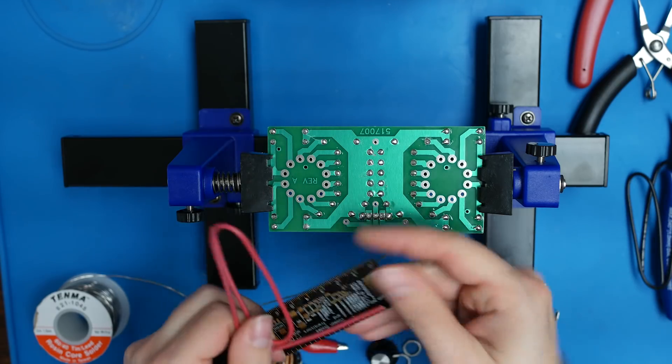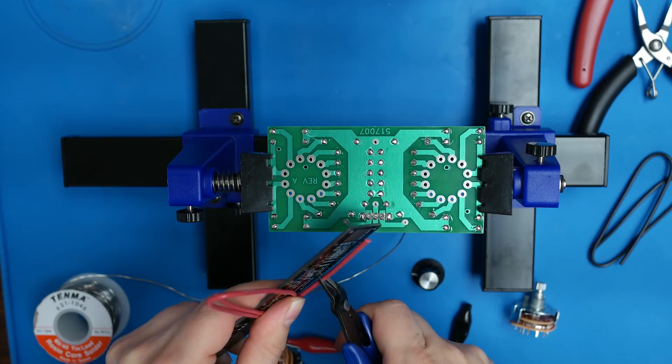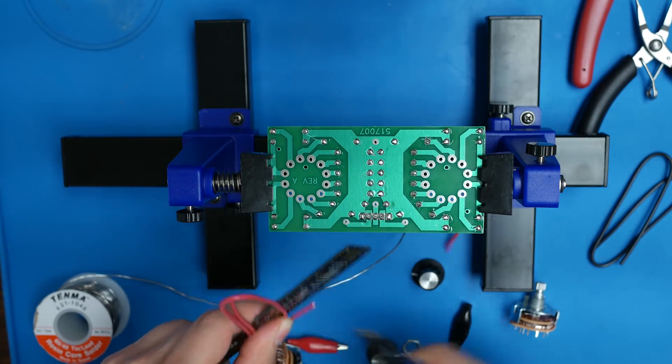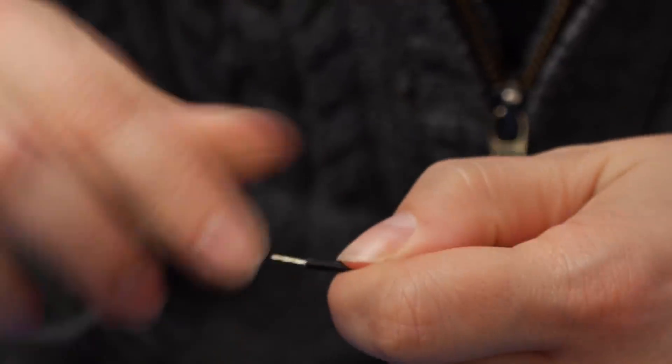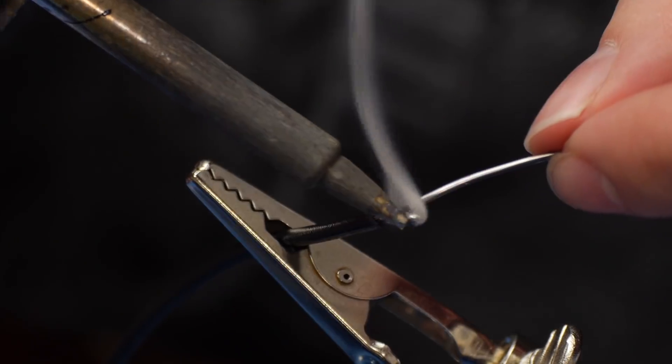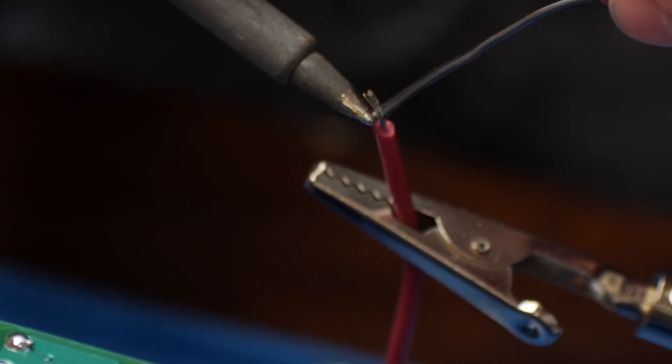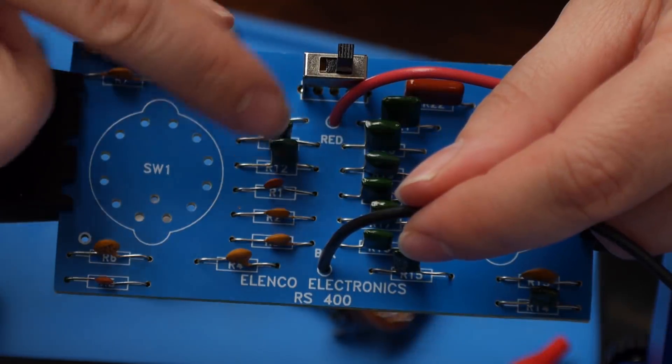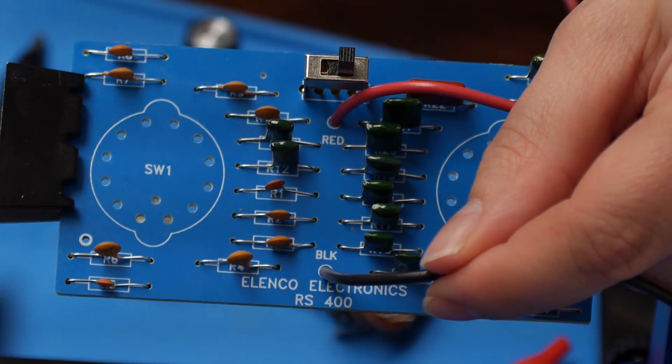Next, take your red and black wires, cut one and a half inches off of each, and set that aside for later. Take the larger pieces of red and black wire and strip the ends. We want to tin the ends by adding a small amount of solder. Solder the red wire to red on the PCB and the black wire to black on the PCB.